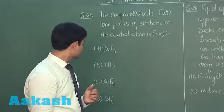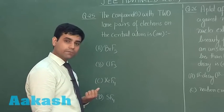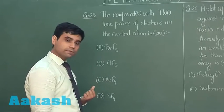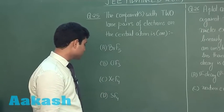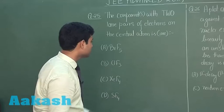The first option is BrF5, second option is ClF3, third option is XeF4 and the fourth option is SF4. Let us draw their structure.